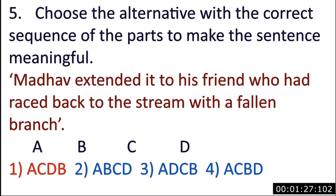Question number 5. Choose the alternative with the correct sequence of the parts to make the sentence meaningful. The sentence is: Madhav extended it to his friend who had raced back to the strip with the fallen branch. And the answer for this question is option number 1, i.e. A, C, D, B.